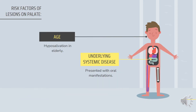Age is also an important risk factor for lesions on the palate. Elderly patients usually present with hyposalivation, where their salivary flow rate is reduced. Saliva is important in balancing the pH of the oral cavity, balancing oral microbial activity, and providing retention to the denture base. However, in cases of hyposalivation, it may cause sensitive points in the mucosa and poor retention between the denture base and the mucosa, giving rise to development of lesions.